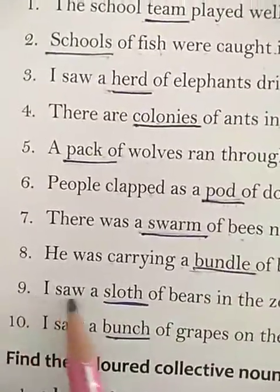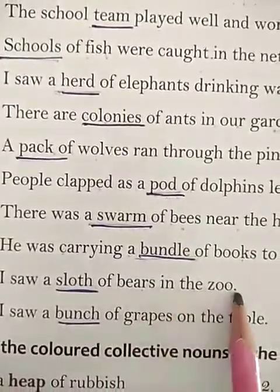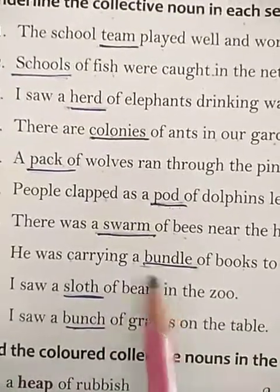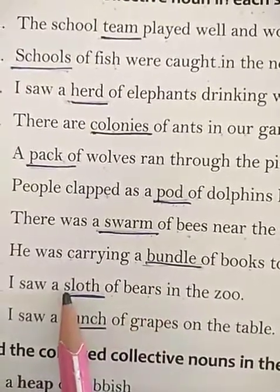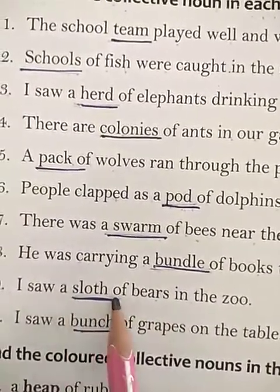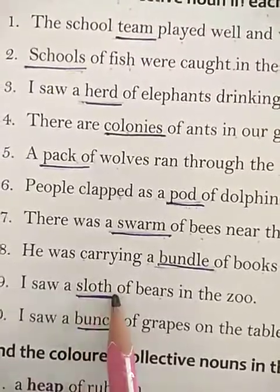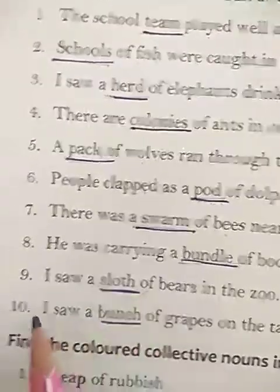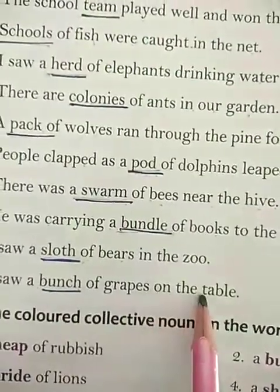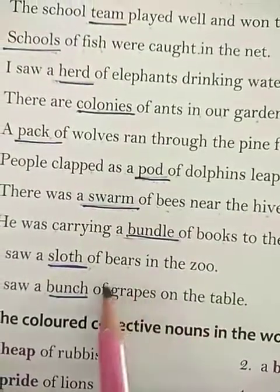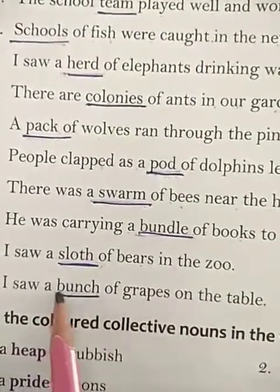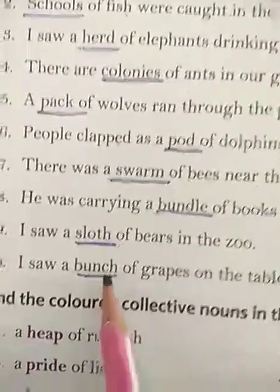Number 9: I saw a sloth of bears in the zoo. Here, the group is shown by 'sloth', so sloth is a collective noun. Number 10: I saw a bunch of grapes. The group of grapes is referred to by 'bunch', so it is a collective noun.